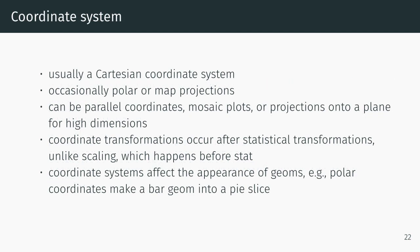The coordinate system is usually Cartesian, occasionally polar or map projections. It could be parallel coordinates, mosaic plots, or projections onto a plane for high dimensions. Coordinate transformations occur after statistical transformations, unlike scaling which happens before. Coordinate systems affect the appearance of geoms. For example, polar coordinates make a bar geom into a pie slice.